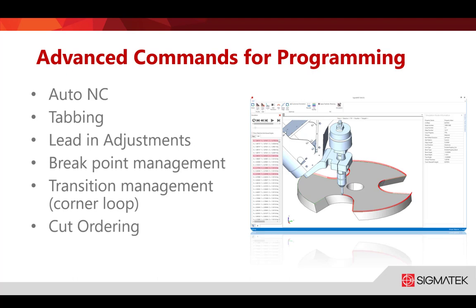Inside part mode we have AutoNC options. We can also tab our bevels and adjust independent lead-ins — for example, if we have a top knife or bottom knife with a land, we can control the individual lead-ins for the land as well as the straight cut. We can do break point management — controlling the head to stay at a certain angle to a certain point, then switch angles as it moves into the part. We can also control transitions such as corner loops, cutting order, ramping, and cut quality changes.